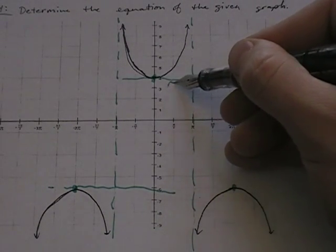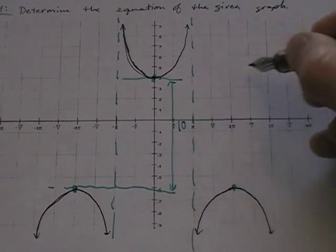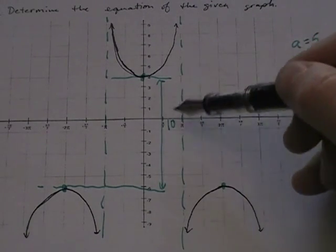That total height from negative 6 to 4, that's 10, so my a term is 5. My a term is 5, that's half of this distance.